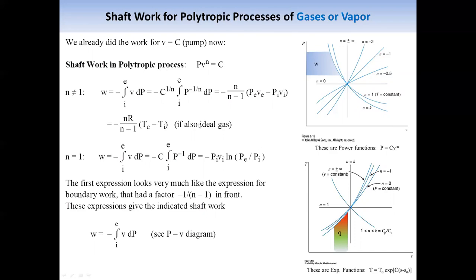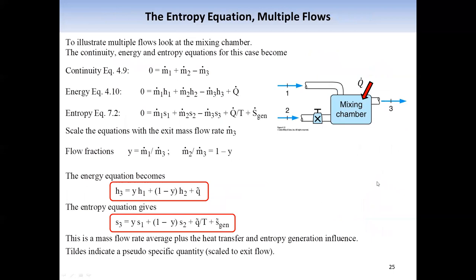We have discussed these two equations for gases. The graphical representation: shaft work can be represented as the area on the left-hand side of the curve on the PV diagram, which we have discussed earlier. Also, heat transfer can be represented as the area under the curve on the TS diagram. These are the two areas that can be used in some cases.